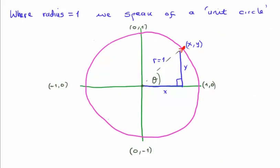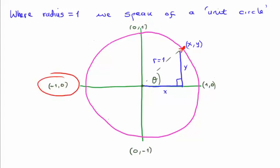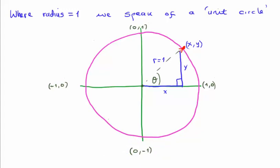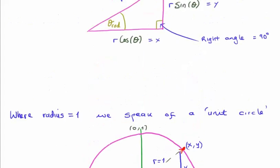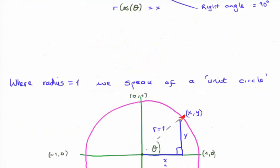Where a circle has a radius of one unit, we speak of it as a unit circle. The key points on the unit circle are: (1, 0), (0, 1), (−1, 0), and (0, −1). Any point in the circle has coordinates x and y. We can drop parallel and perpendicular lines to create a right triangle, whose hypotenuse corresponds to the radius of the circle — that's why I was using r as the hypotenuse earlier.